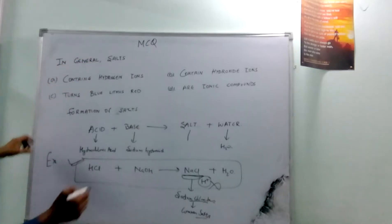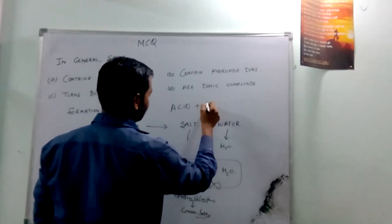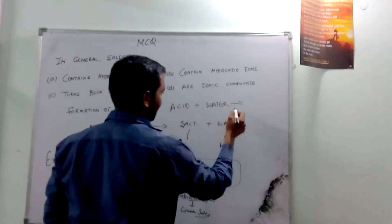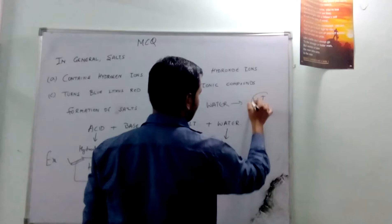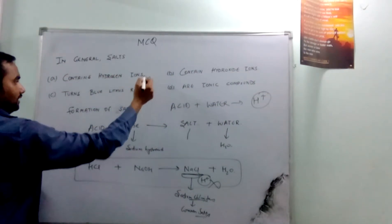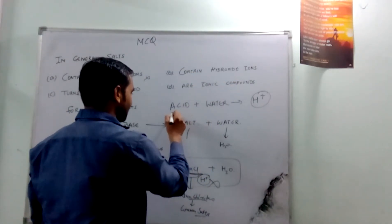Because hydrogen ion is produced when acid reacts with water, or we can say acid reacts with water, or acid in aqueous solution releases hydrogen ion. Okay? So this option is incorrect.